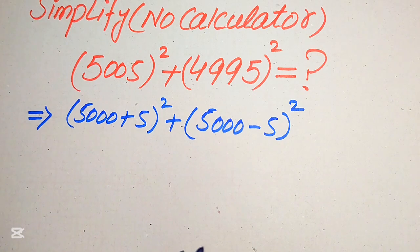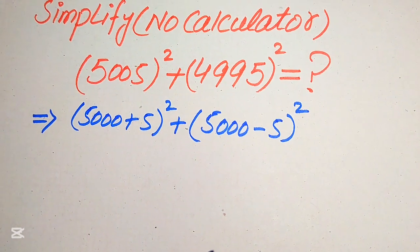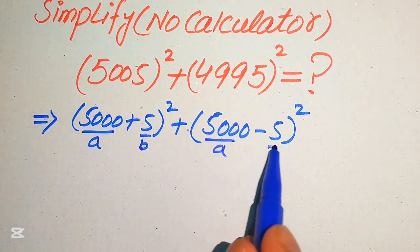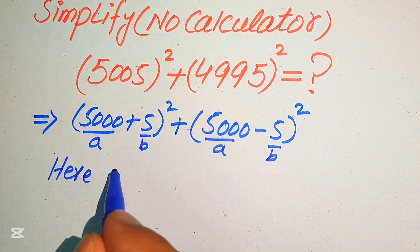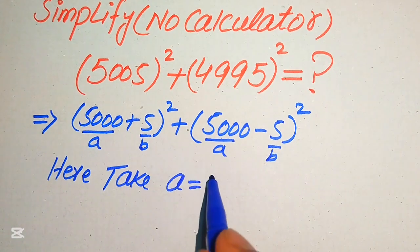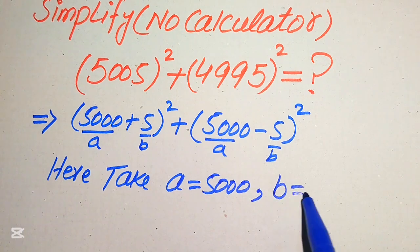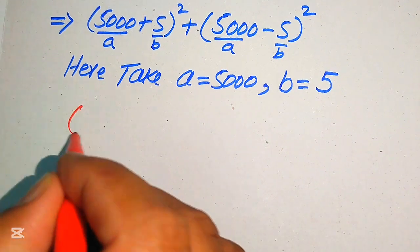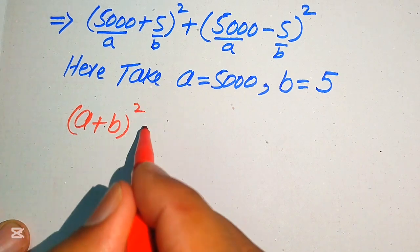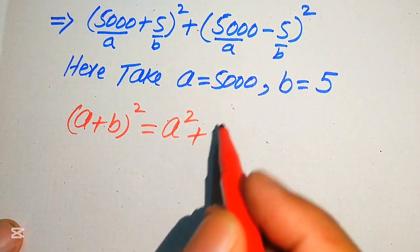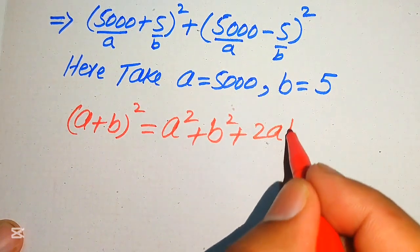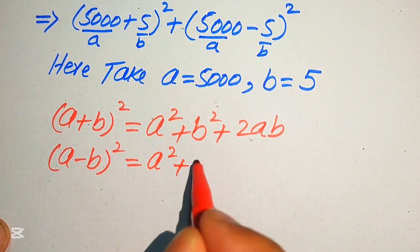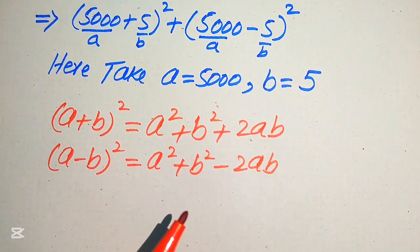Here I will use a nice algebraic formula. We call a = 5000 and b = 5. The formula is: (a + b)² = a² + b² + 2ab, and similarly (a − b)² = a² + b² − 2ab. Note the sign difference: positive 2ab versus negative 2ab.